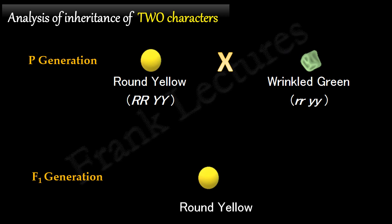Now, what will be the genotype of the plant in the F1 generation? For this, look at the gametes produced by each true breeding plant of P generation.